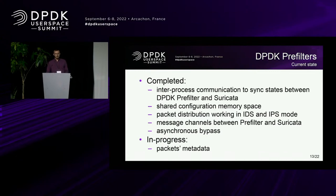The DPDK pre-filter and Suricata need to synchronize together, so we use the DPDK IPC API for Suricata to attach to the pre-filter, tell pre-filter to stop receiving packets, and so on. Configuration also needs to be shared between Suricata and the pre-filter, as the pre-filter initializes all resources and passes them down to Suricata. The pre-filter can work as a single core distributing to multiple Suricata workers. One core of DPDK pre-filter can also work with multiple NICs or multiple ports. This means the cost of adding the pre-filter core to the overall architecture is amortized over the whole architecture. Packet distribution works in both IDS and IPS mode, and there are message channels between Suricata and pre-filter for asynchronous bypass updates.